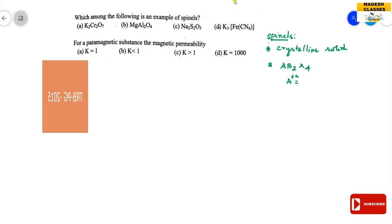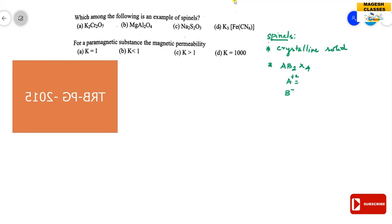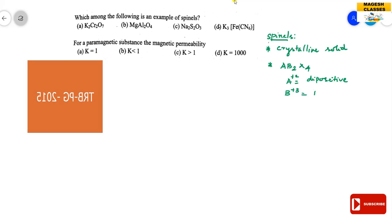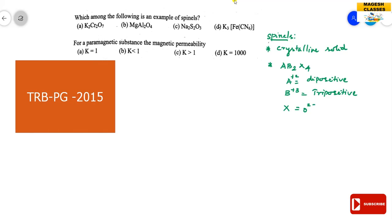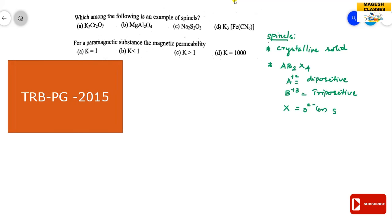A is a dipositive cation and B is a tripositive cation. X is 4 in number — it may be oxide, sulphide, fluoride, or selenide. The cations are occupied in the respective voids in the crystalline solids. There are two types of voids: tetrahedral voids and octahedral voids, and cations occupy the corresponding voids.